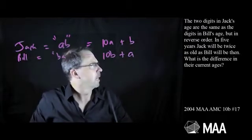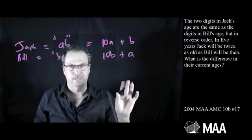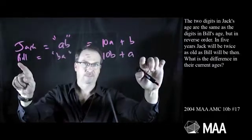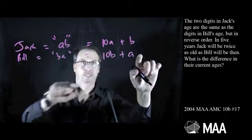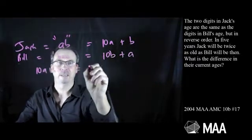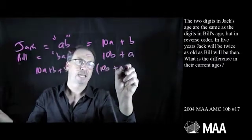All right, then what happens? Jack will be twice as old as Bill will be in five years' time. So if I add five years to this number, it'll be double Bill's age in five years' time, adding five to this number. All right, so 10A plus B plus an additional five years is double Bill's age in five years, 10B plus A plus five.